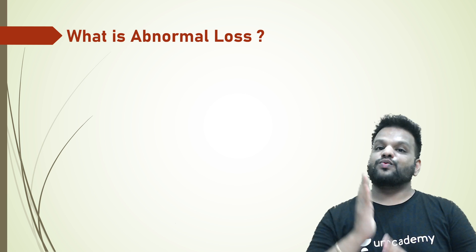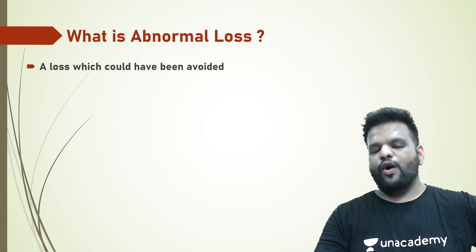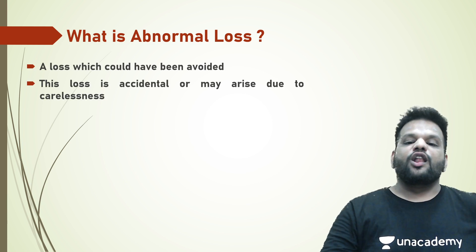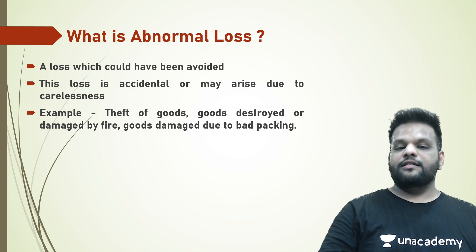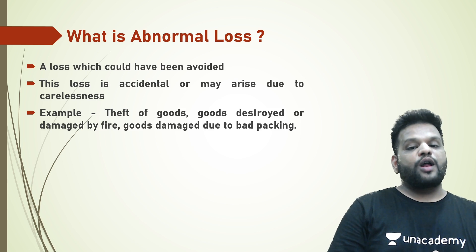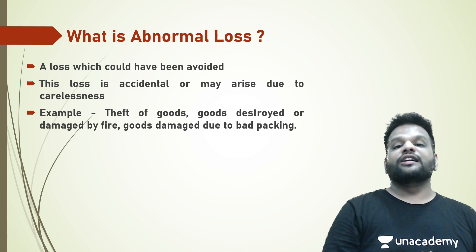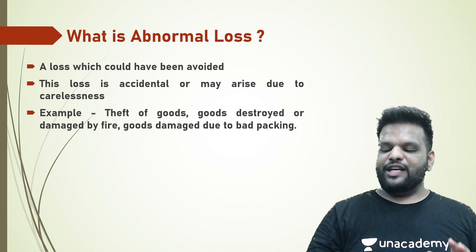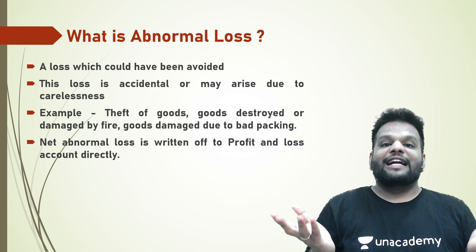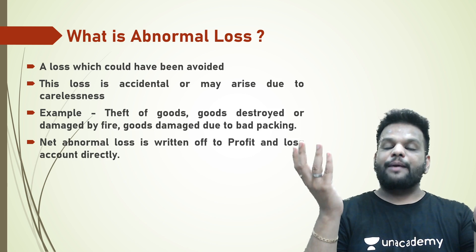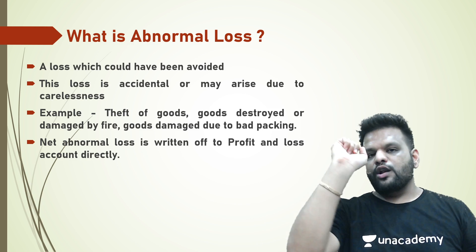So what is abnormal loss? Abnormal loss is a loss that could have been avoided — a loss which is accidental and may arise due to carelessness. Examples of abnormal loss include theft of goods, goods destroyed by fire, and goods damaged due to bad packaging.